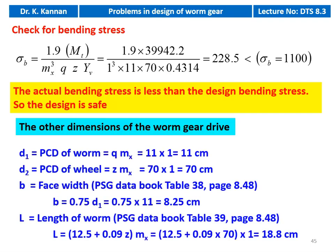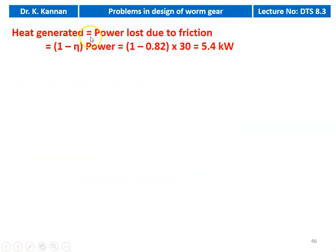We calculate the other dimensions. D1, PCD of the worm: 11 cm. D2, PCD of the wheel: Z × MX = 70 × 1 = 70 cm. Face width from table 38: B = 0.75 × D1 = 0.75 × 11 = 8.25 cm. Length of the worm from table 39: L = 12.5 + 0.09 × Z × MX = 12.5 + 0.09 × 70 × 1 = 18.8 cm. The heat generated equals the power loss due to friction: (1 − eta) × P = (1 − 0.8) × 30 = 5.4 kW.